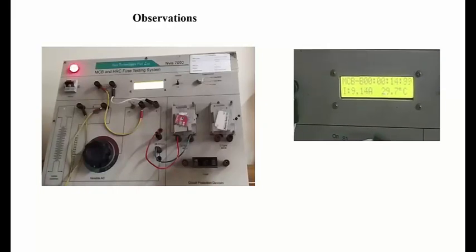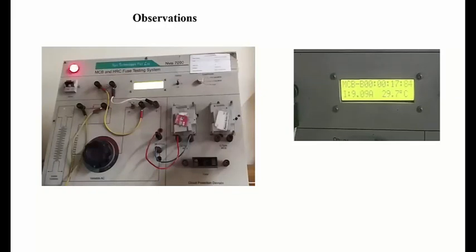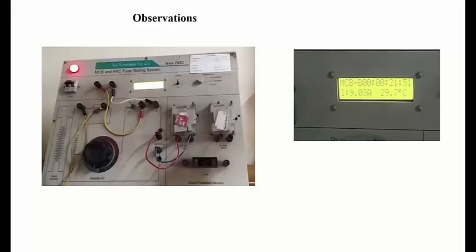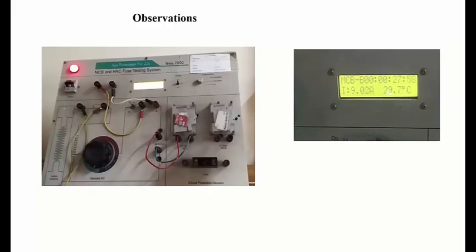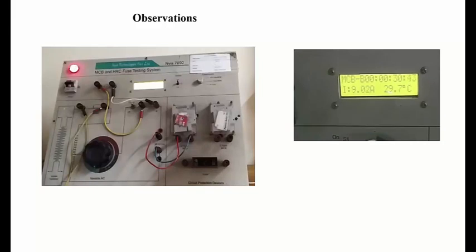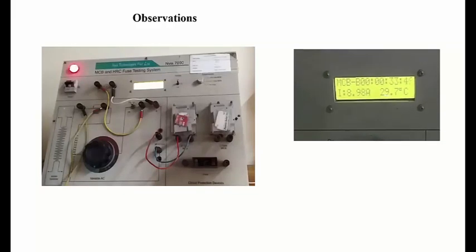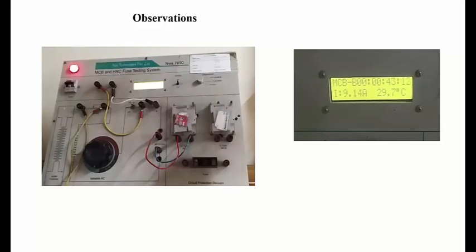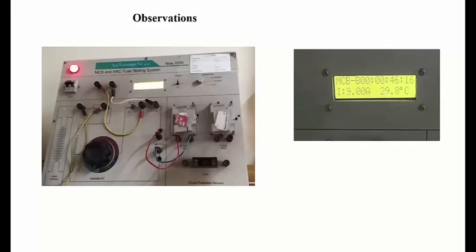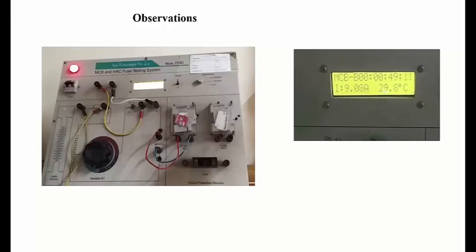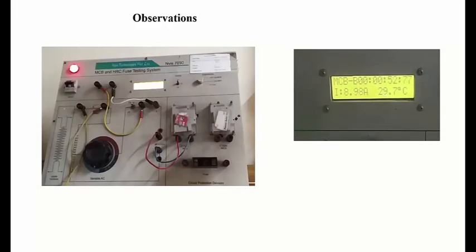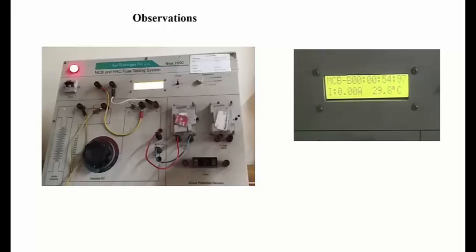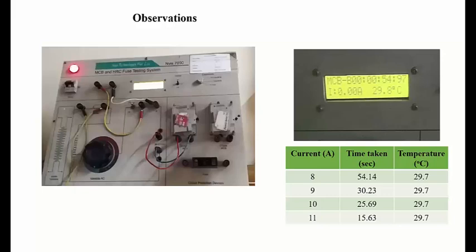We'll be trying to maintain this current at 9 ampere using the rheostat and observe the time when the MCB operates. The temperature is also shown. We'll be noting down the current, the time it takes to operate, and the temperature of the MCB. This is the first set of readings.